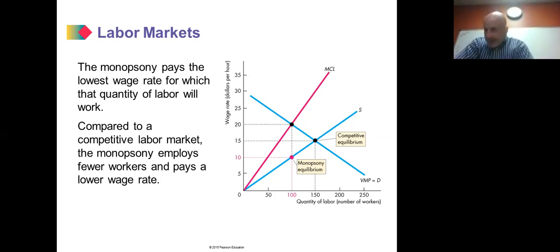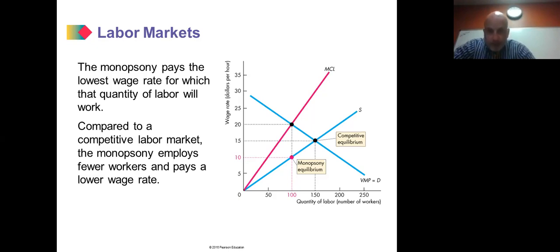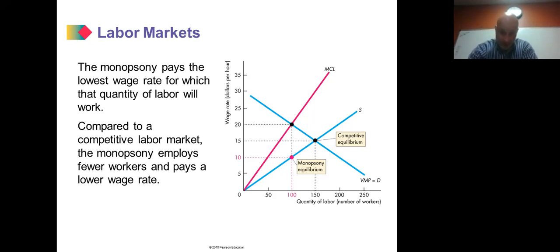The monopsony maximizes profit by setting the marginal cost of labor equal to the value of the marginal product, and pays the lowest wage rate that the quantity of labor will accept. In this example, they hire 100 workers, and at 100 workers the lowest wage rate individuals are willing to work for is $10 an hour — so that is the wage rate they pay.